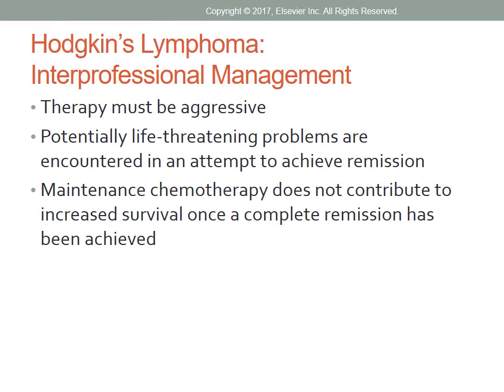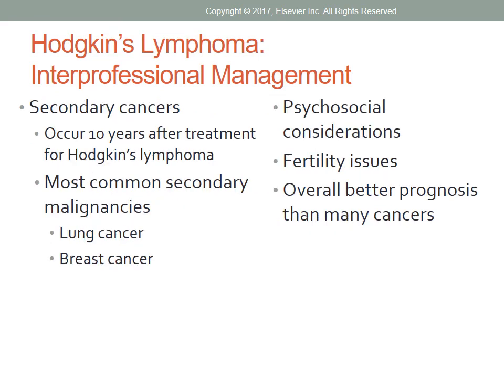Occasionally, single drugs may be administered palliatively to patients who cannot tolerate intensive combination therapy. A serious consequence of treatment for Hodgkin's lymphoma is the later development of secondary malignancies, as well as potential long-term toxicities such as endocrine, cardiac, and pulmonary dysfunction. Patients should have close follow-up and screening for early detection of secondary malignancies such as lung cancer and breast cancer, which are the most common secondary malignancies for Hodgkin's lymphoma.